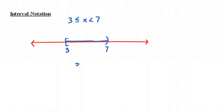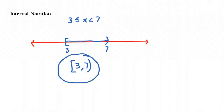To write this in interval notation, it would be the interval from 3 to 7, closed at 3 and open at 7. You put the left endpoint of your interval in the first spot and the right endpoint in the second spot. So you would not do 7 comma 3 — you'd do 3 comma 7. Just like we have the bracket at the 3, we'll have a bracket here. Just like we have an open parenthesis at the 7, we'll have an open one here.